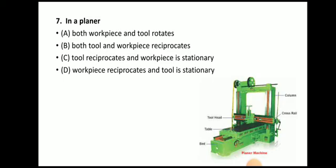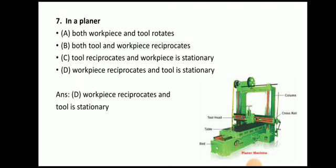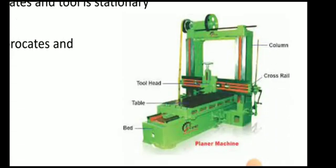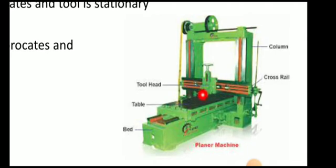Next question: in a planer, the workpiece reciprocates and the tool is stationary. That is the key difference between shaper and planer. In a shaper, the tool reciprocates while the workpiece is stationary, whereas in a planer, the workpiece reciprocates and the tool is stationary. Here the tool is fixed, the workpiece is mounted on the table, and the table reciprocates.